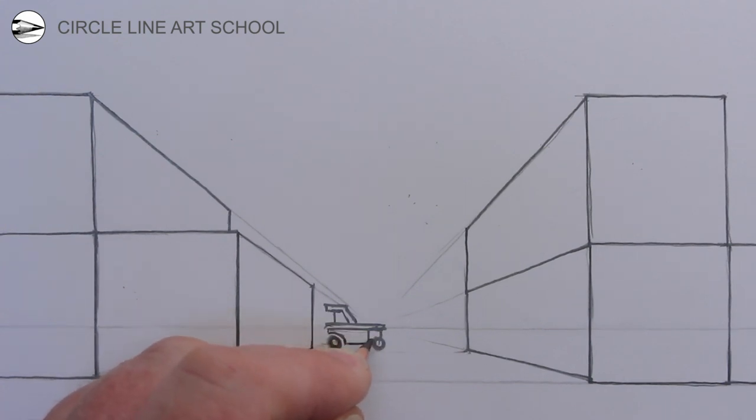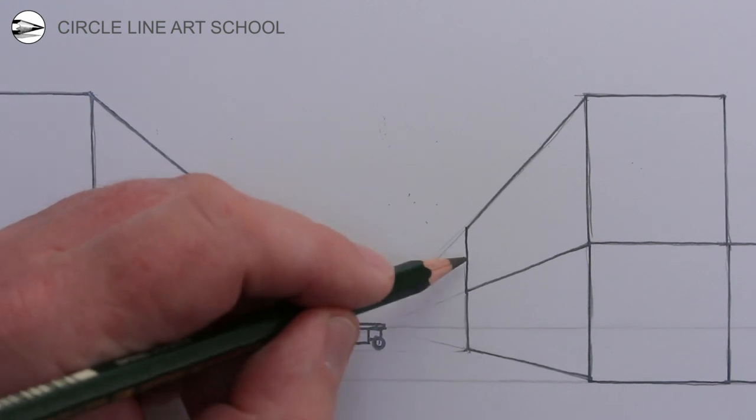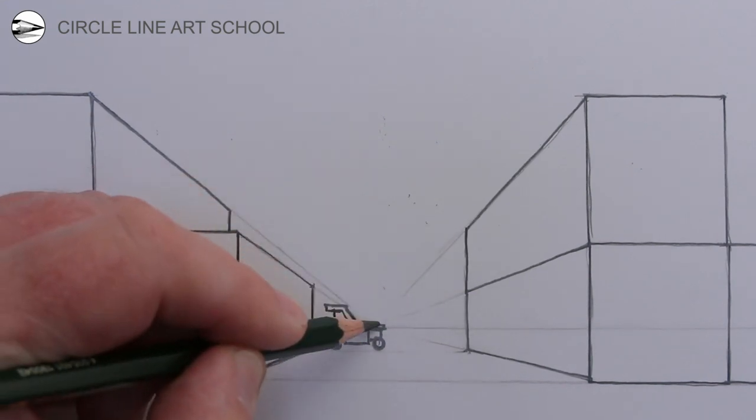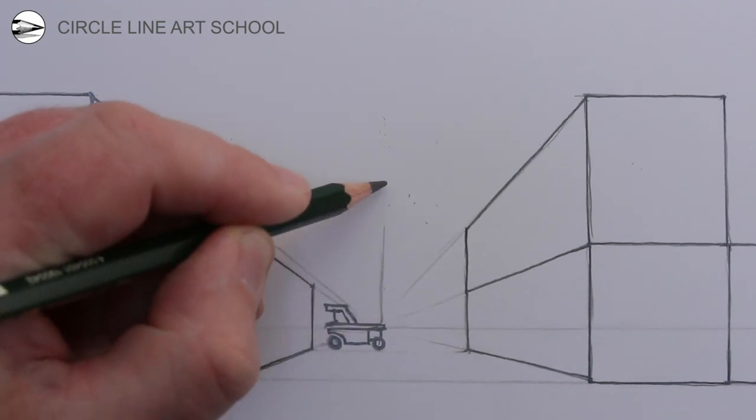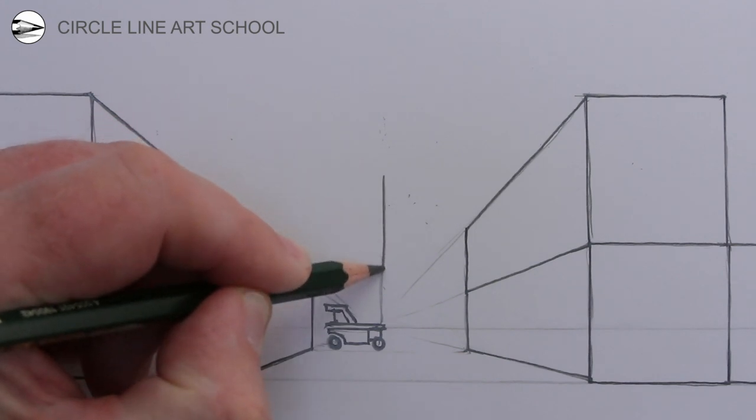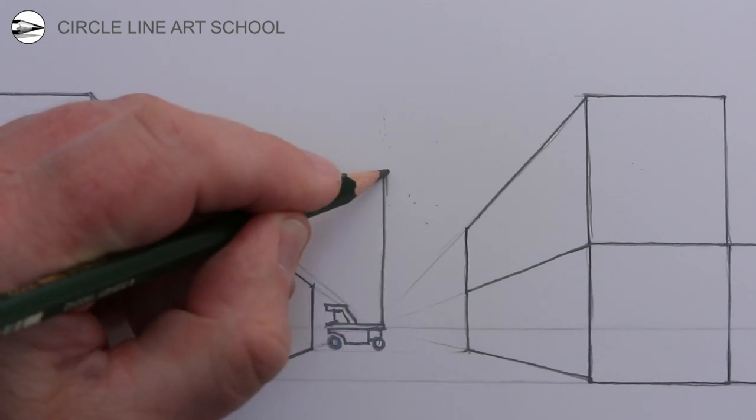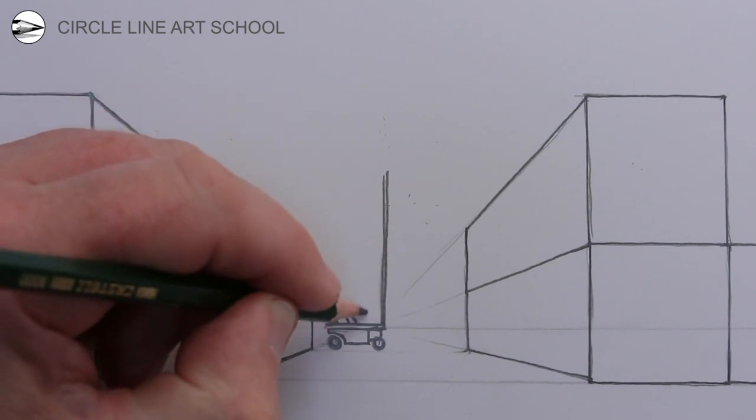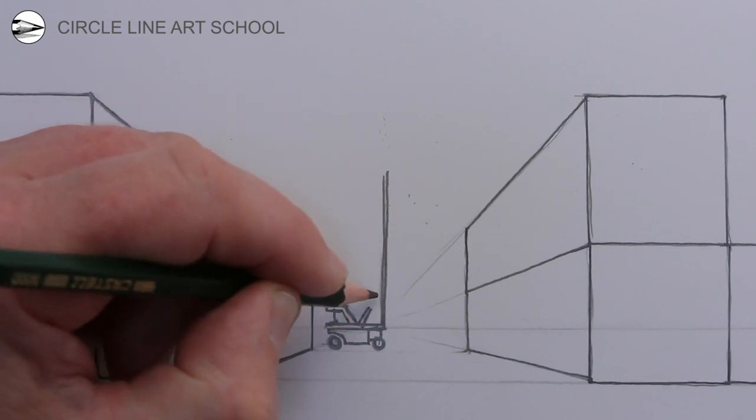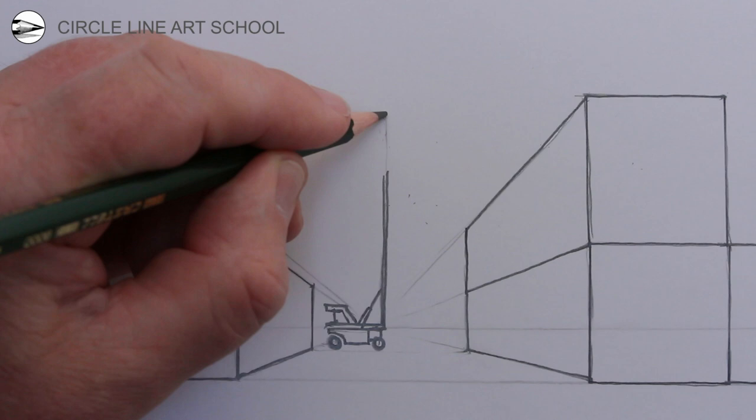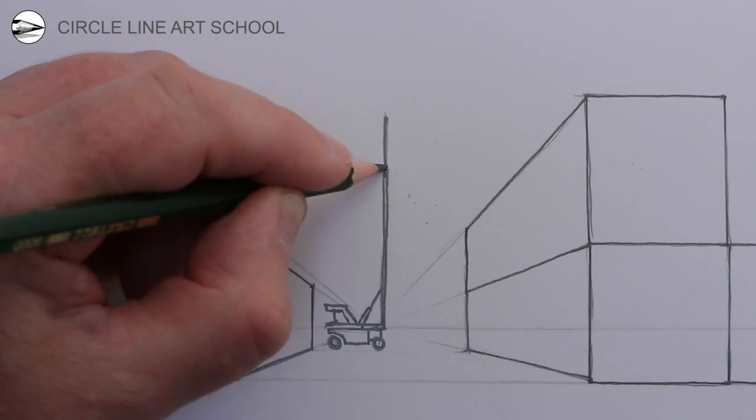Now for this forklift truck we can draw a long vertical arm going quite high up into the air. And then once we've got that we could draw a hydraulic piston at an angle, a diagonal line joining the truck to the vertical arm of the truck.